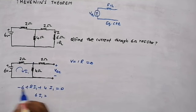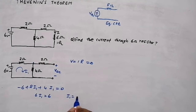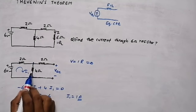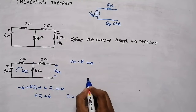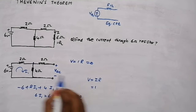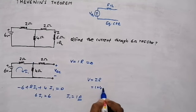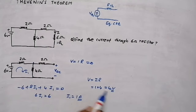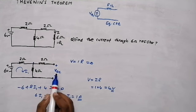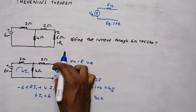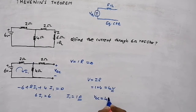So 4 plus 2 gives 6I1. Moving minus 6 to the other side gives 6I1 = 6, so I1 = 1A. The voltage across the 4 ohm resistor: V = I × R = 1 × 4 = 4V. So the voltage across this resistor is 4V. The voltage we get here is the same at the open circuit terminals, so the open circuit voltage is 4V.